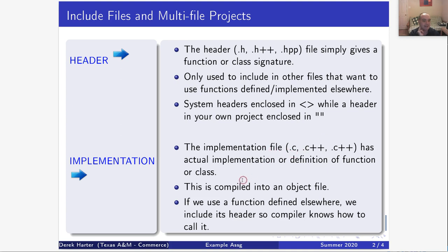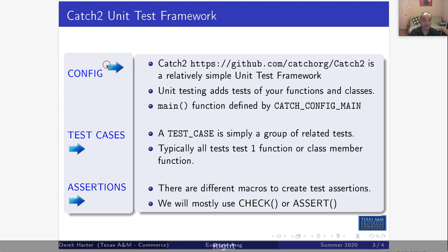We use .cpp files by convention for our class projects. By implementation I mean the actual definition of the function — or, when we get into classes, the actual implementation of the member functions for the class. These are the files that get compiled into object files and linked together into our executables.